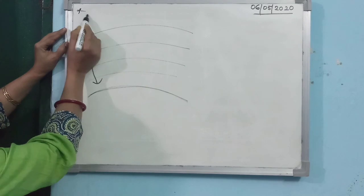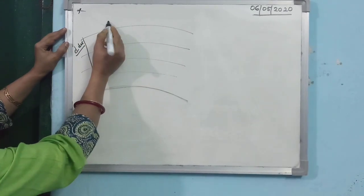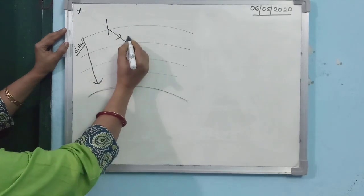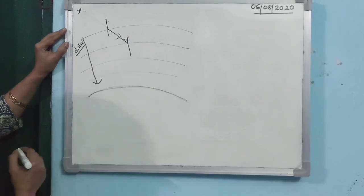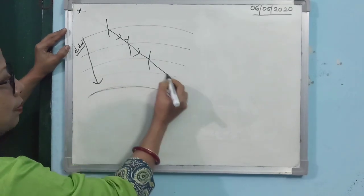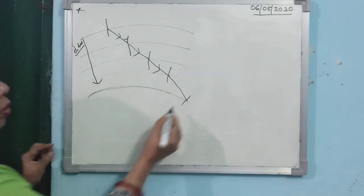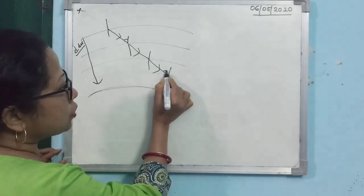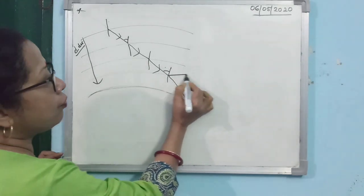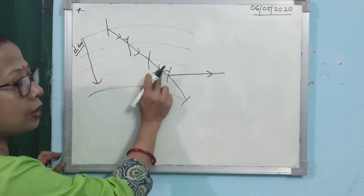Sunlight entering this atmosphere moves from a denser to a rarer medium, so it bends away from the normal. As it continues falling through successive layers, the angle of incidence keeps increasing and the light keeps bending away from the normal at each layer.